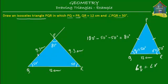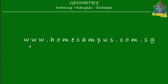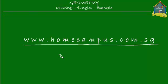You've drawn the correct triangle — an isosceles triangle. The two equal sides are 9.3 centimeters and the angles opposite to them are 50 degrees each. The angle at P is 80 degrees and the base QR is 12 centimeters. That brings us to the end of this lesson. I hope you understood it. Go and practice at www.homecampus.com.sg — practice makes perfect. This is Em signing off for now.